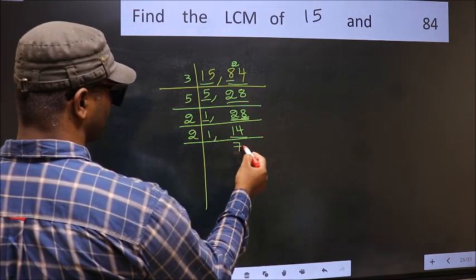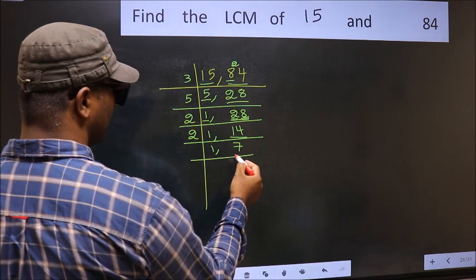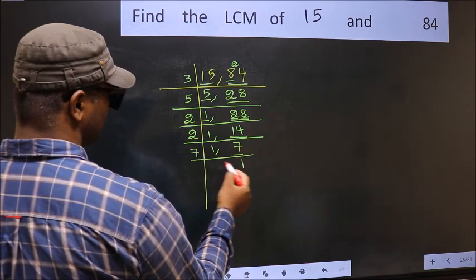Now we have 7. 7 is a prime number, so 7 once 7.